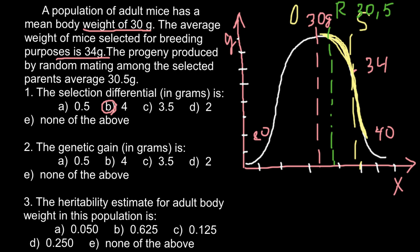The second question: the genetic gain in grams is? The genetic gain is the difference between the original population mean of 30 grams and the response to selection of 30.5 grams in the F1 next generation. The difference is 0.5 grams. So the answer is A.